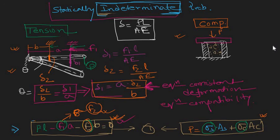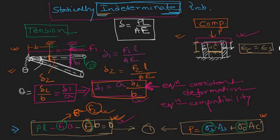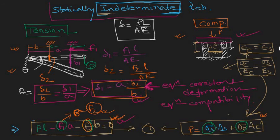Your task is to apply this compatibility equation to the compression problem. As a hint: the steel and concrete both compress together, so the strain in both is the same. That is the compatibility equation: sigma C divided by E_C equals sigma S divided by E_S. Replace this relation into the equilibrium equation and you will be able to solve the problem.